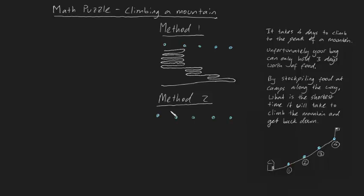The trick with this second method is to realize if we're starting at our home just here, to prepare this mountain with enough food to do one giant stretch, what we'll need to do is put two days worth of food stockpiled at camp one, two days worth of food stockpiled at camp two, and one day worth of food stockpiled at camp three.